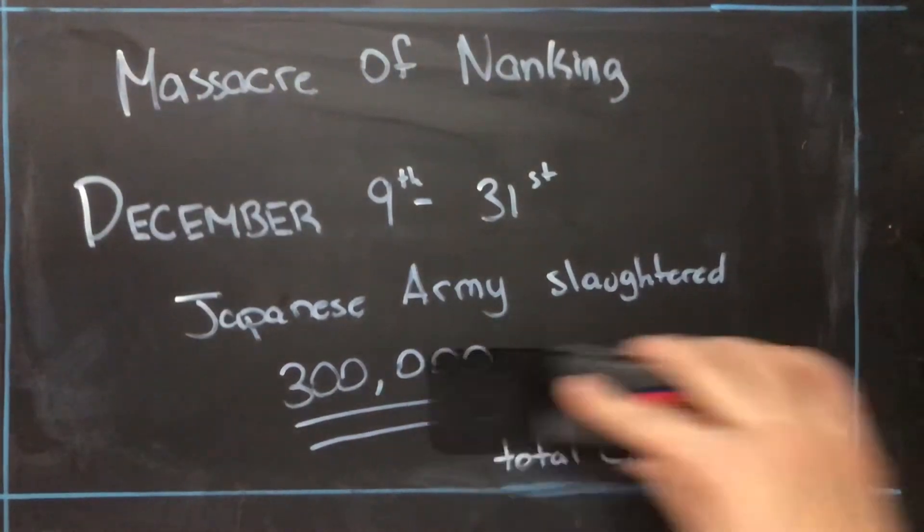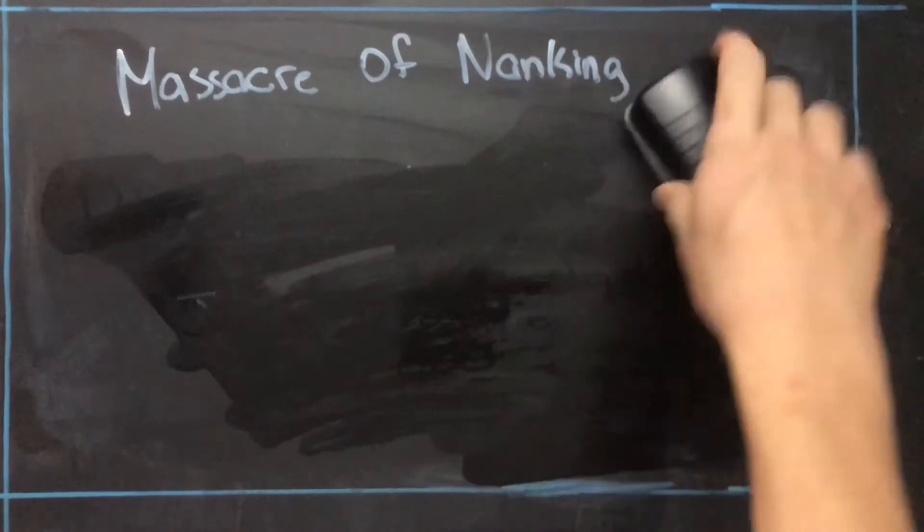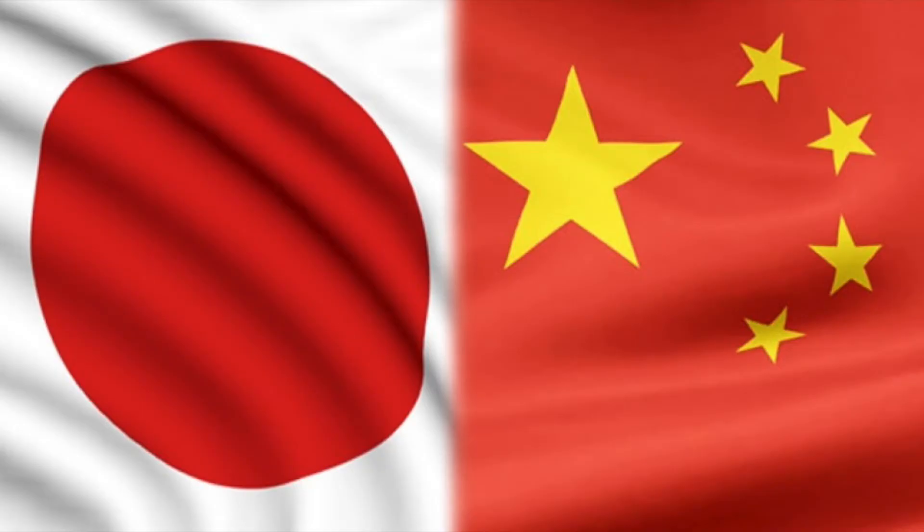The Massacre of Nanking is remembered by the Chinese as an infamous symbol of war crimes. Hardly a day goes by without a program about the massacre playing on Chinese television. This is a complete contrast to how some Japanese citizens and officials perceive the massacre.